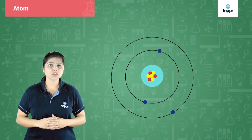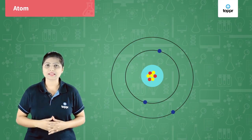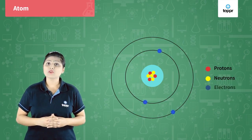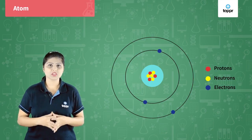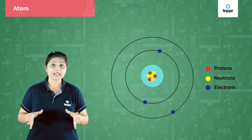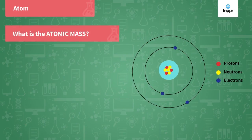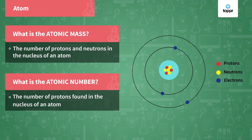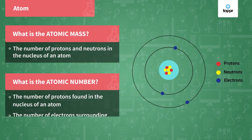Let us see how Johan Döbereiner classified elements. He knew that every element is made up of similar particles called atoms. Every atom is made up of a center positive charge called the nucleus. In the nucleus there are two kinds of particles: protons and neutrons — protons are positive and neutrons are neutral. Electrons are present around the nucleus in orbits and are negatively charged. In an atom, the number of protons always equals the number of electrons. Every element has an atomic mass and atomic number. Atomic mass is the total number of protons and neutrons, while atomic number is the number of protons — which also equals the number of electrons.